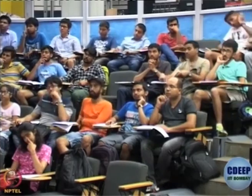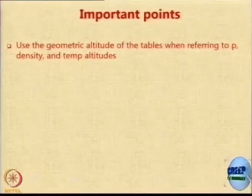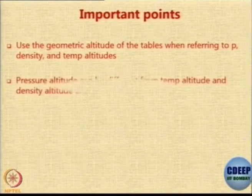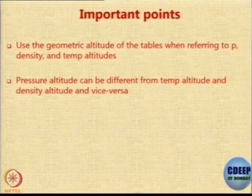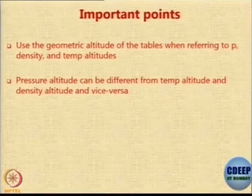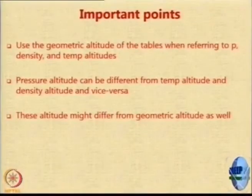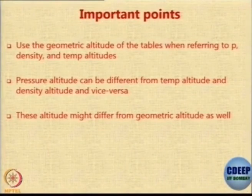The non-standard temperature affects pressure and therefore the measurement — that is the reason for the correction. Whenever you refer to ISA tables, you should refer to geometric altitude. Whenever you refer to pressure altitude, density altitude, and temperature altitude, all three can be different simultaneously at the same location — for example, a pressure altitude of 3 kilometers and a temperature altitude of 4 kilometers all at the same time. That is possible because the references are the three separate parameters. You can be flying at many different altitudes, and of course these may not match the geometric altitude because temperature, pressure, and density do not follow ISA — they have their own variations, so you have to be careful.